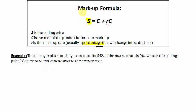We will be using this formula in this next example. The manager of a store buys a product for $42, so this is the cost he pays to the vendor. If the markup rate is 9%, what is the selling price? And be sure to round your answer to the nearest cent.